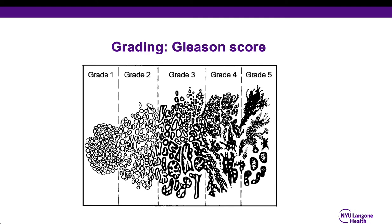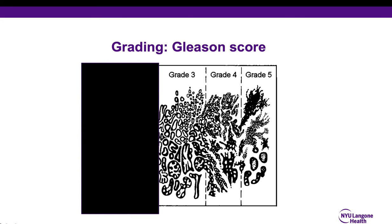The score ranges from number one to number five, with one being the least aggressive and grade five being the most aggressive. When a pathologist reviews the prostate biopsy slide, they look at the glands and determine if any of the glands qualify as prostate cancer, and if so, they assign it a grade from one to five. With the current grading system, grade one and two prostate cancers are no longer considered cancerous, and therefore the lowest possible grade currently is grade three, with grade three being the most similar to a normal prostate gland and grade five being the most abnormal.